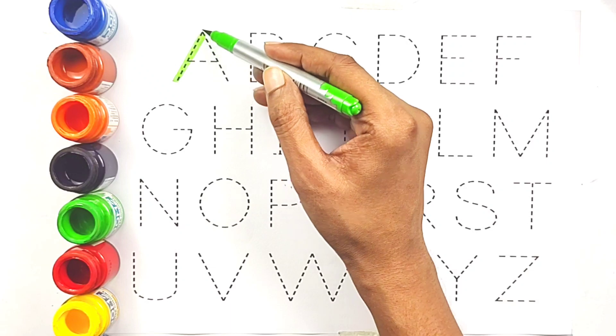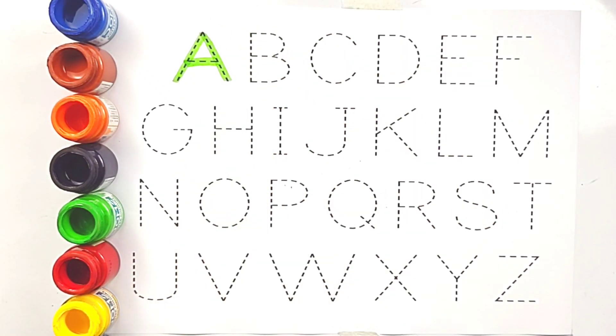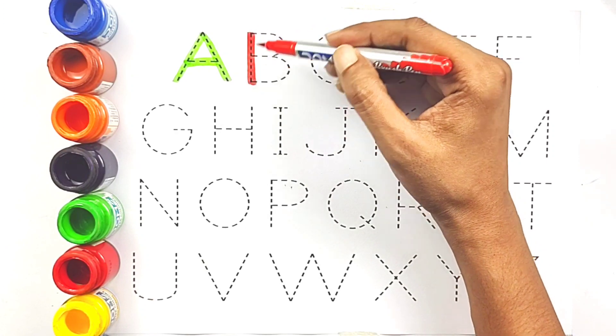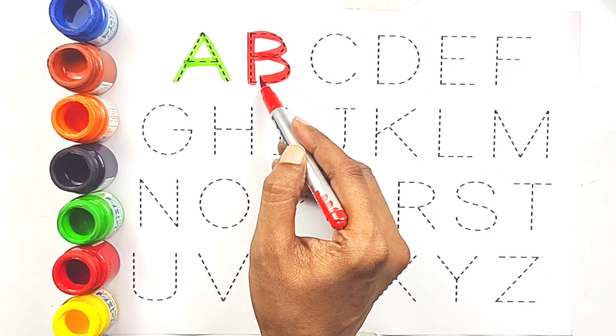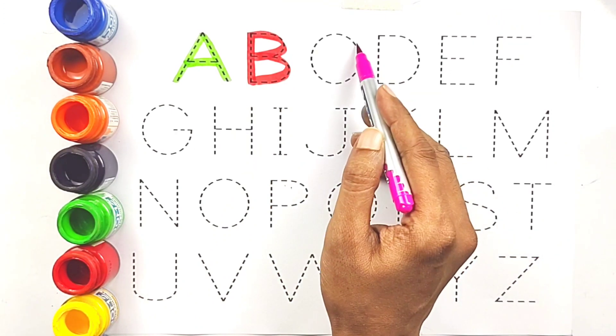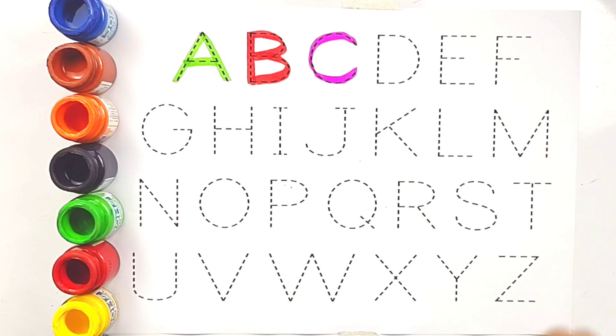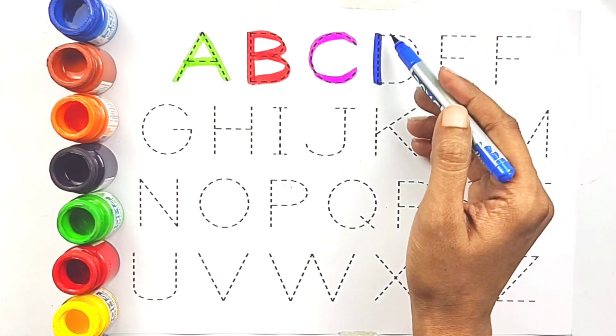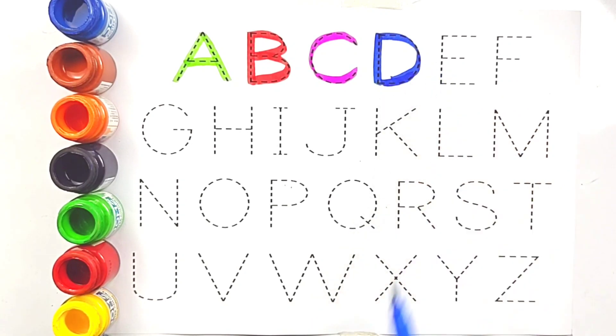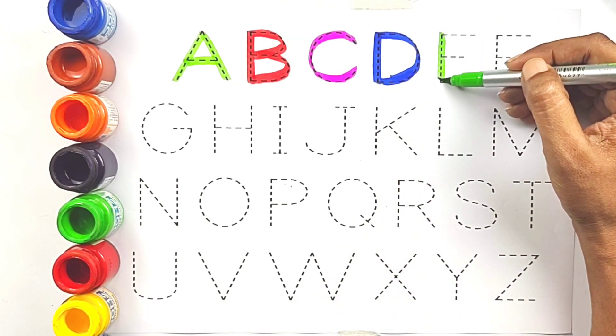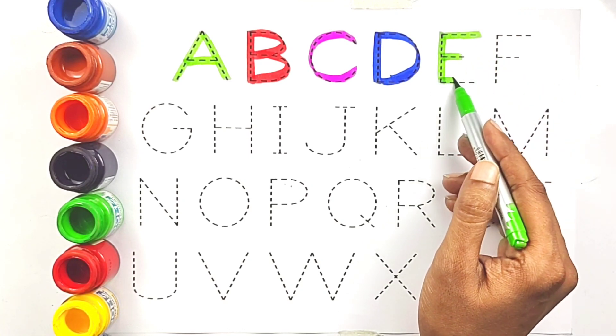Green color. A, E for aeroplane, E for aeroplane. Red color. B, B for balloon, B for balloon. Magenta color. C, C for cat. Blue color. D, D for dog, D for dog. Green color. E, E for eagle, E for eagle.